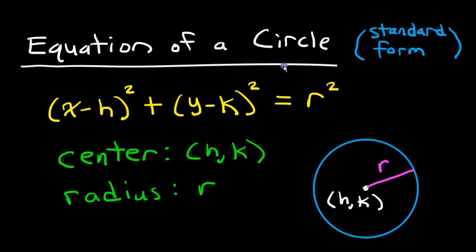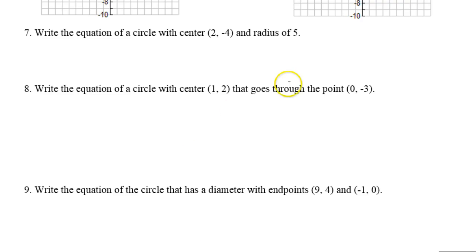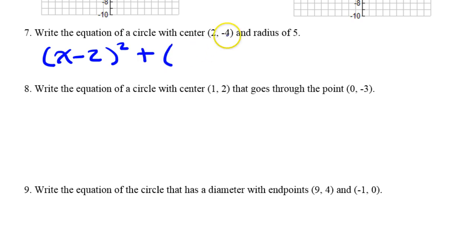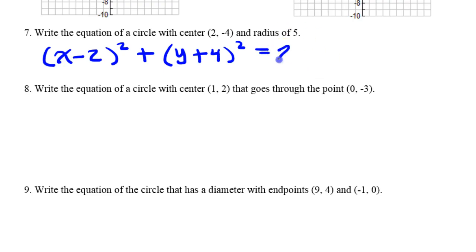Now, remembering the standard form equation of a circle, the H and the K is the center. So this will look like the opposite of H and K when I put them in the equation. Since I have a positive 2, in the equation I'm going to have minus 2, squared. Because I have a negative 4, in the equation I'm going to have y plus 4. It's always going to be the opposite of these two. Now this end of the equation is the radius squared. So if the radius is 5, I should put 25, because it is the radius squared that belongs here.